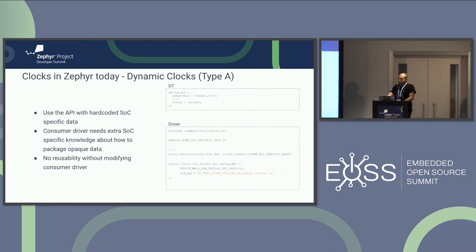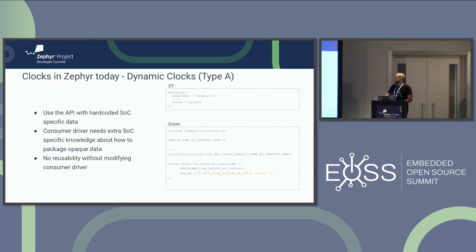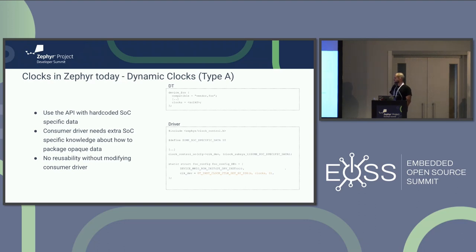For type A clocks, in the device tree the device which is the consumer references via clocks another node which is a type A clock. Those use the API with hard-coded SoC-specific data — you call clock_control_on, you cast it to void star which is what clock_control_subsys_t is behind the scenes, and in your init loop you get the clock controller reference. The SoC-specific data is coupled to the producer, so you can't reuse that driver with a different producer.